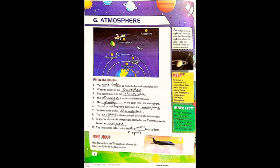Question 1: The dash saves us from the harmful ultraviolet rays. The answer is the ozone layer. Question 2: Weather occurs in the dash — the layer is the troposphere. Question 3: The ozone layer is in the dash — the answer is the stratosphere.